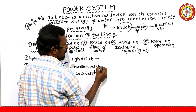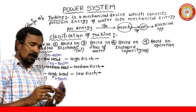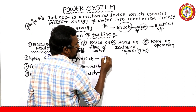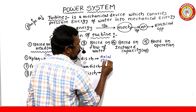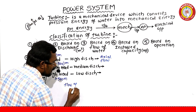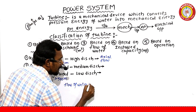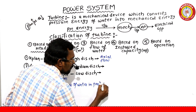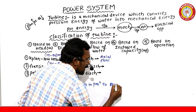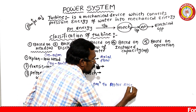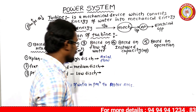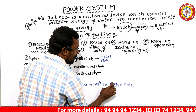Based on flow of water: the Kaplan Turbine is an axial flow turbine. Axial flow means the flow of water is in parallel to the rotor axis — the flow of water and the rotor axis are parallel to each other.